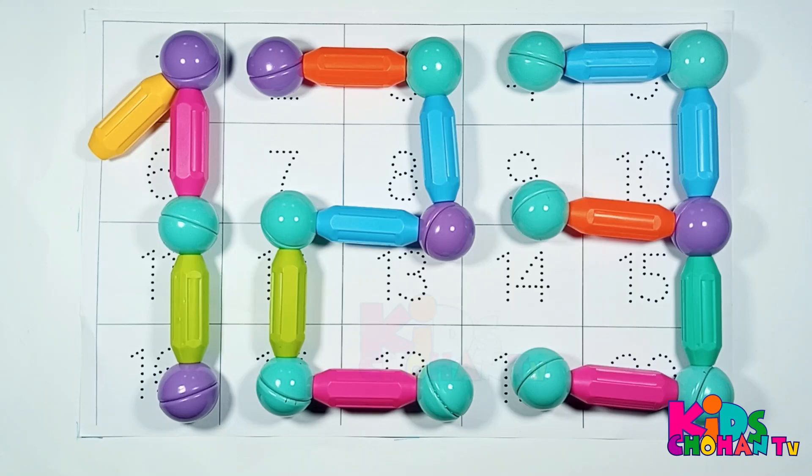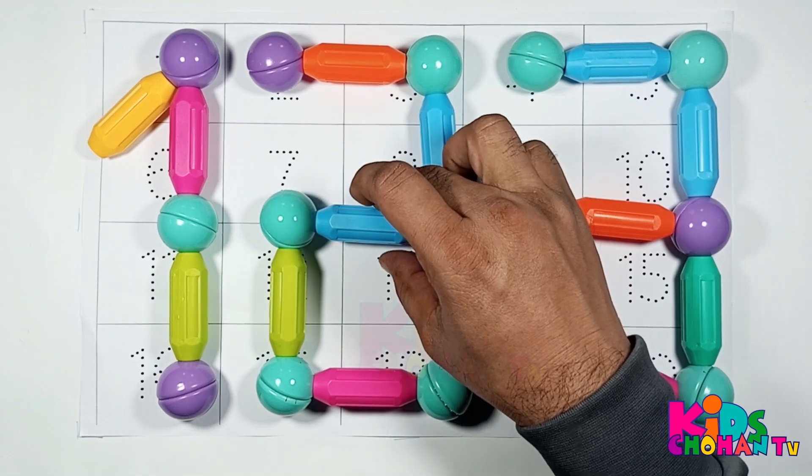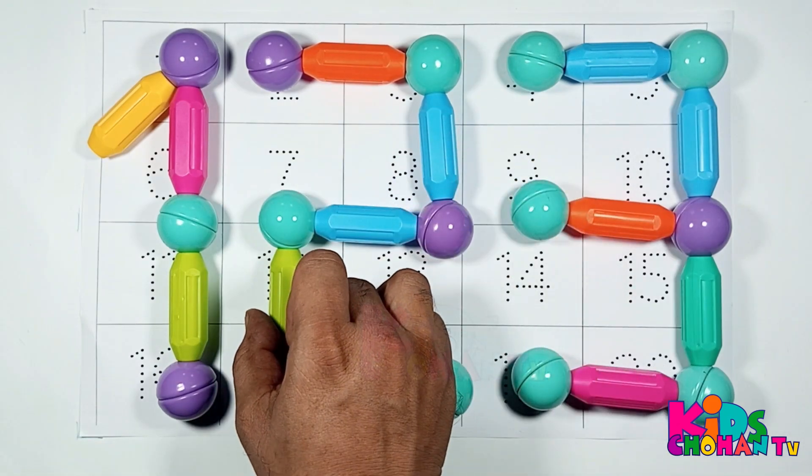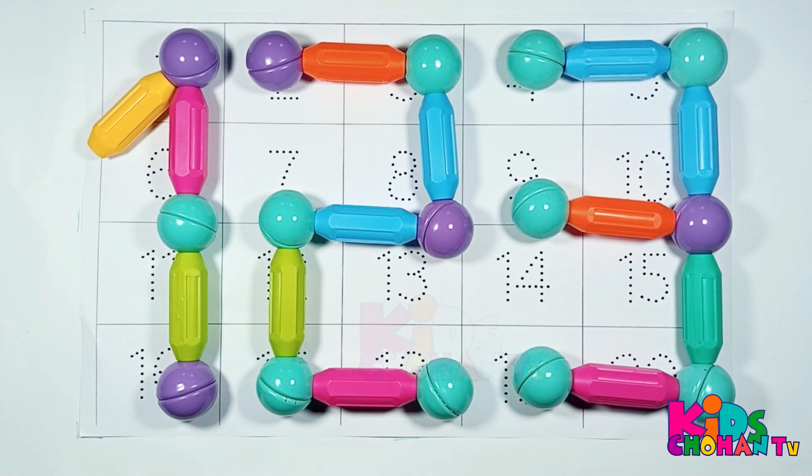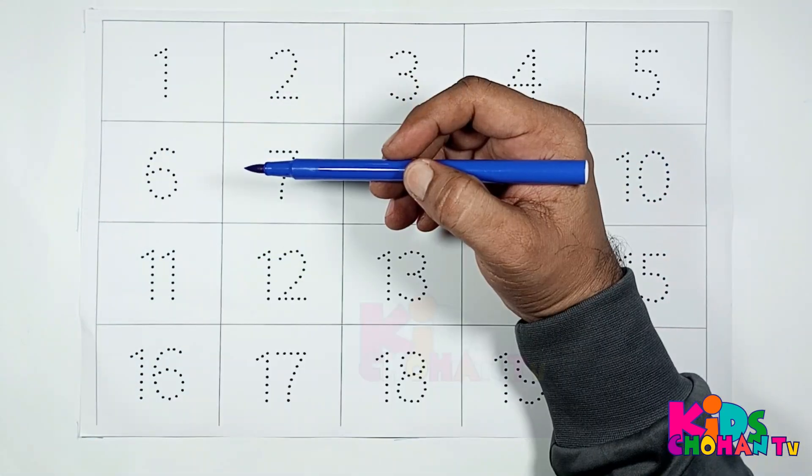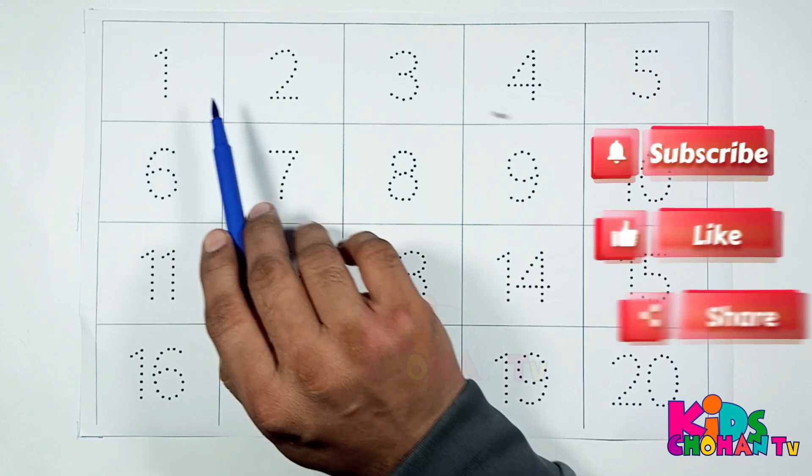Hello kids, welcome back! Let's learn colors name: yellow color, orange color, light blue color, light green color, pink color. Let's start kids. In this video we will press numbers.